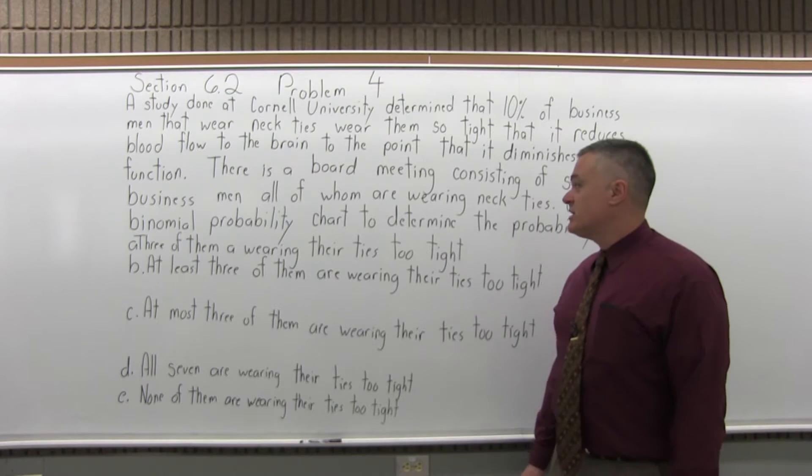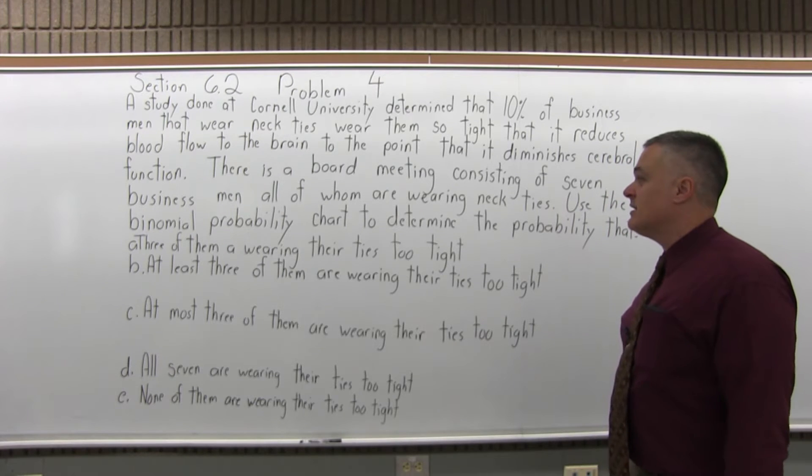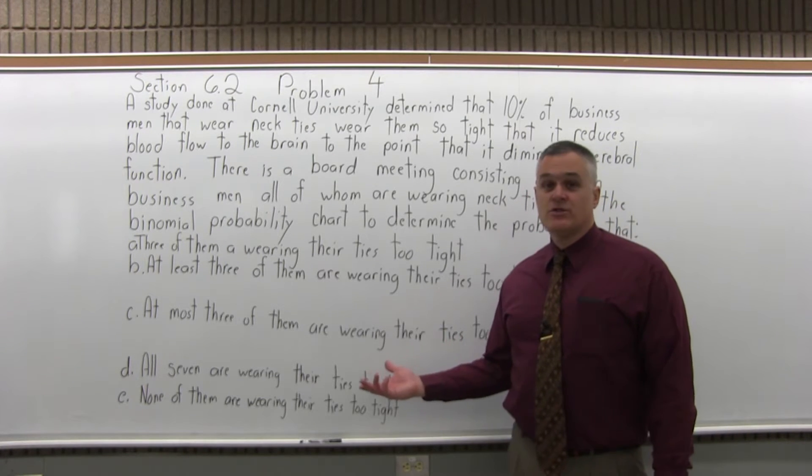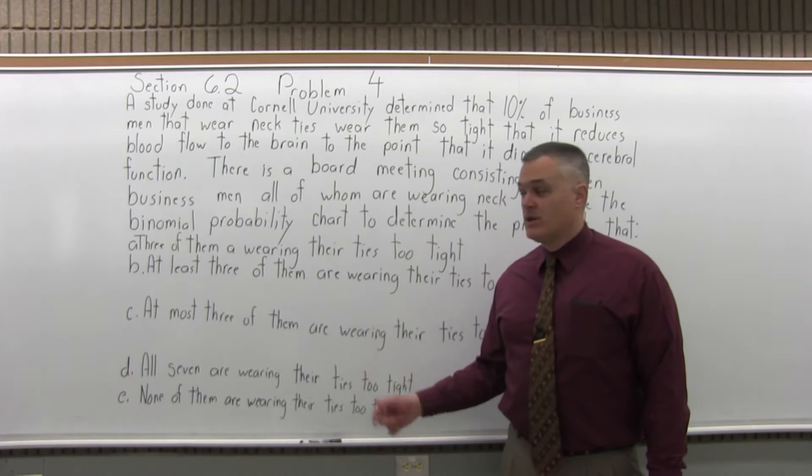Use the binomial probability chart to determine the probability that three of them are wearing their ties too tight, at least three, at most three, all of them, and none of them.